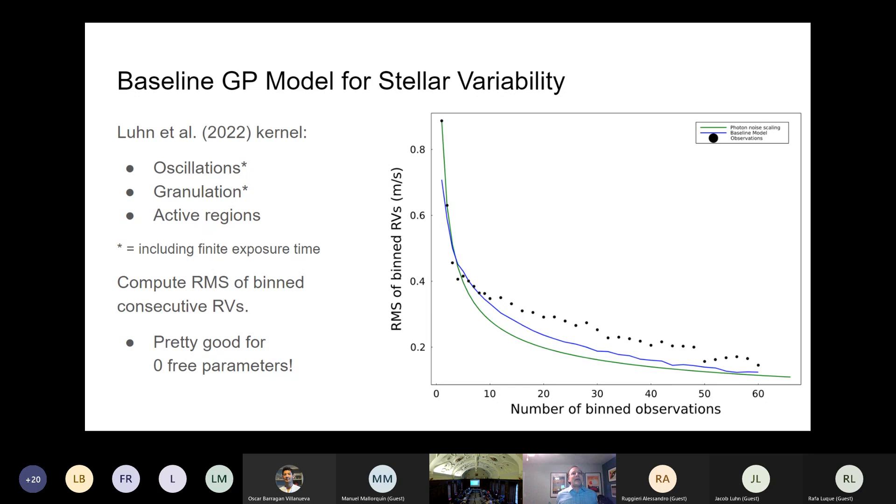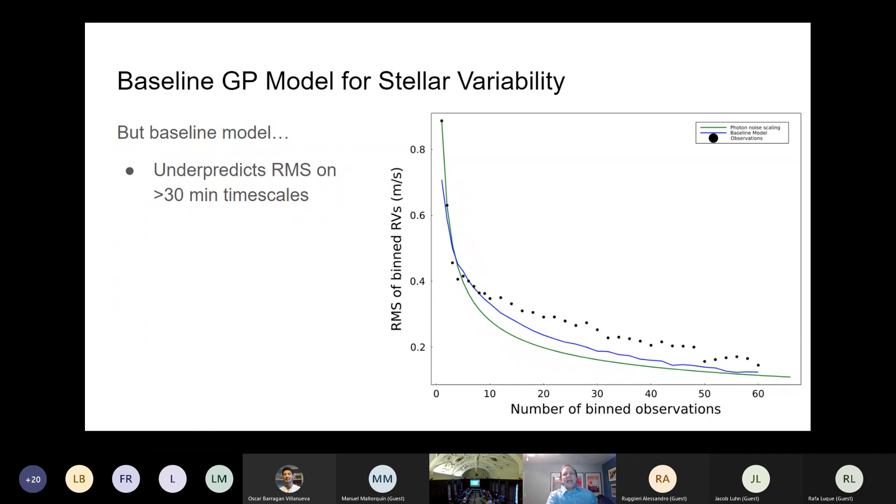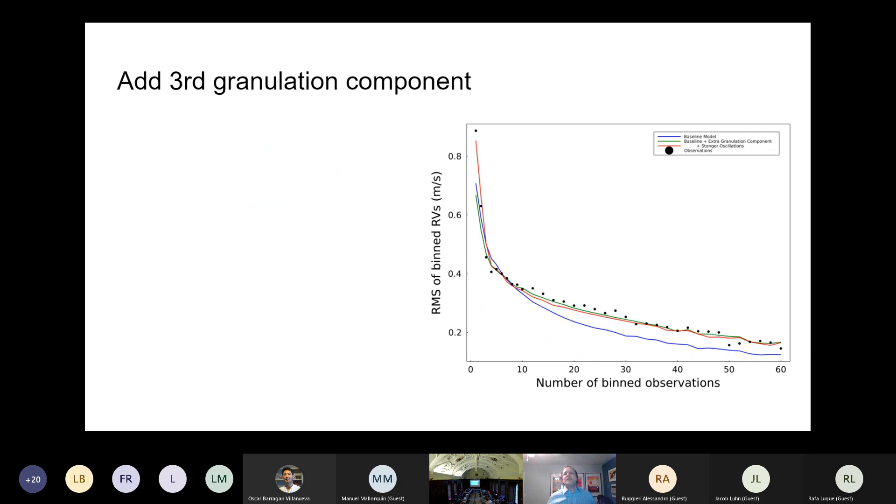So let's take that baseline model where we plug in the active regions, granulation, oscillations, take into account the finite exposure times, wrap it all up in one GP, and plot what we should have seen. So there's zero free parameters, nothing is tuned here, and okay, I'd say it's pretty good. But of course, we always will aim for better. The key thing to note here is that the effects of granulation, the longer time scales within a night, aren't estimated accurately, in the sense that there's a higher RMS than you'd expect from our baseline model with no tweaks. And so you see that mostly once you start to hit 30 minutes or more.